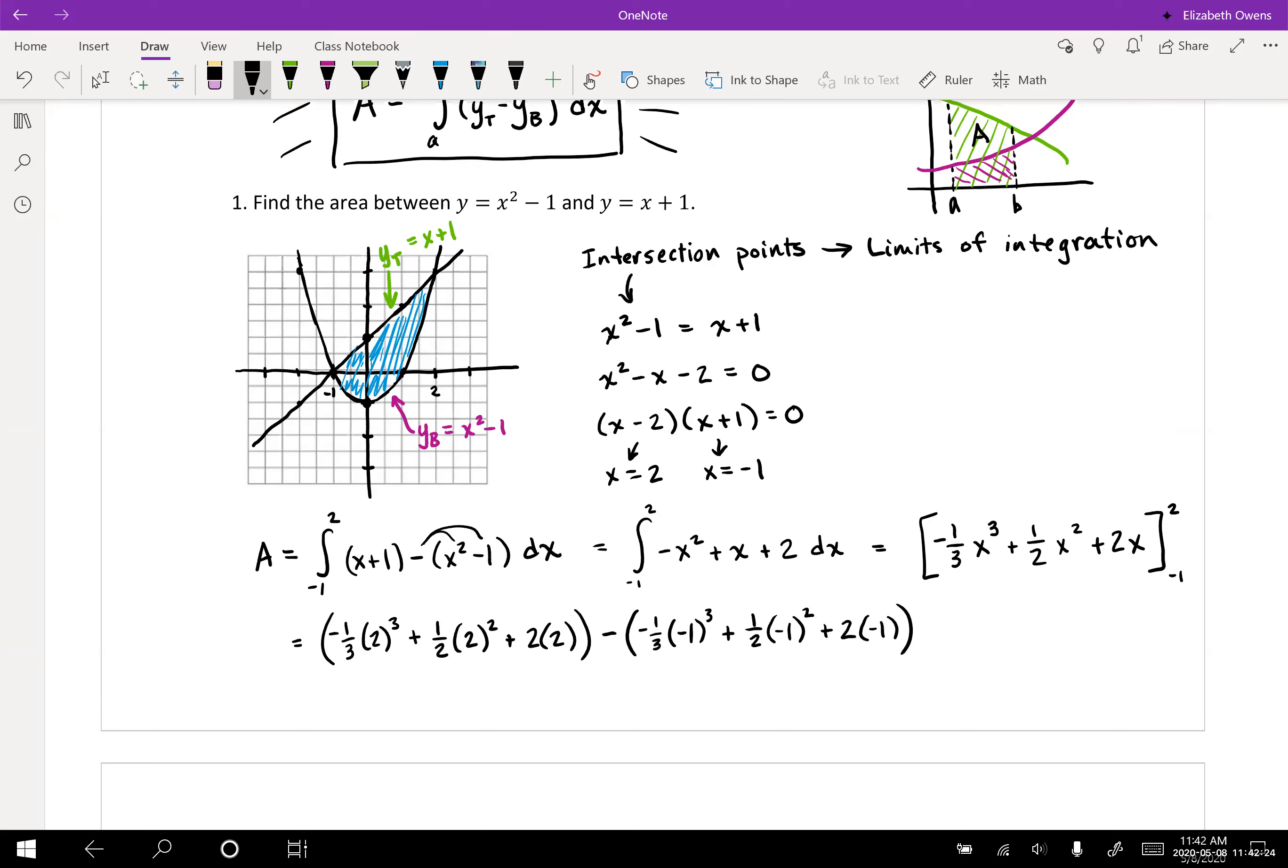Arithmetic time. Two cubed is eight, so that's negative eight thirds, and then half of four would be two, so plus two plus four. And then minus that would be positive one third plus one half minus two.